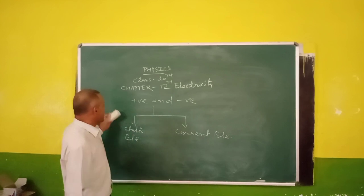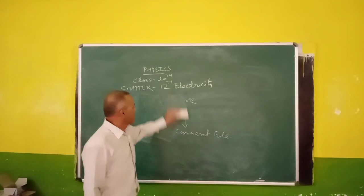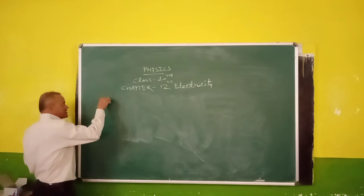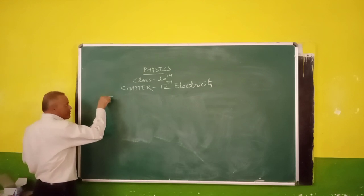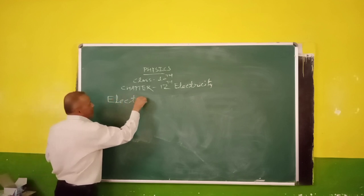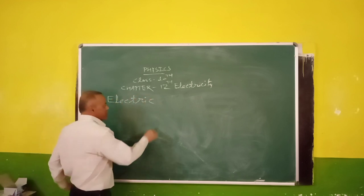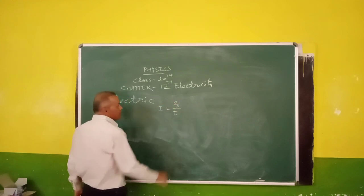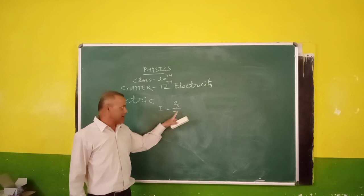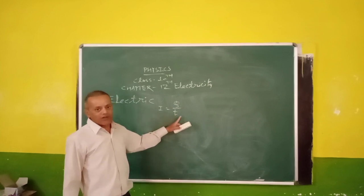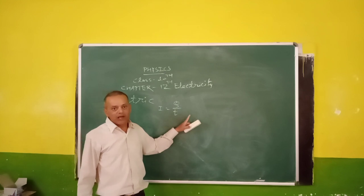In class 10, the first topic is electric current. Whenever electric charge flows through the conductor, it is known as electric current. Mathematically, it is defined by I = Q divided by T, where Q is the charge going through the conductor and T is the time taken. So we can say the rate of flow of electric charge through a conductor is called electric current.